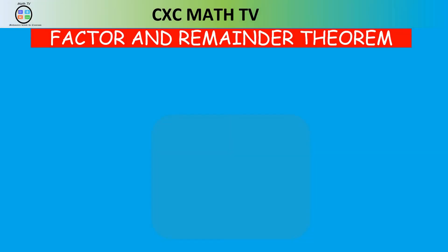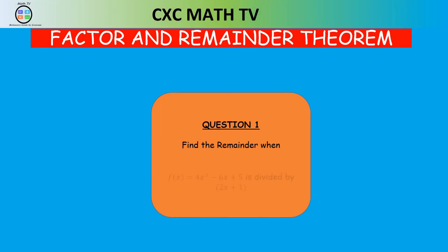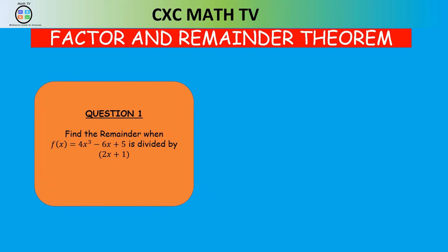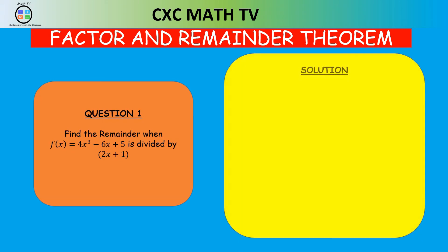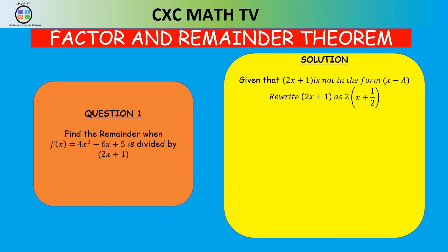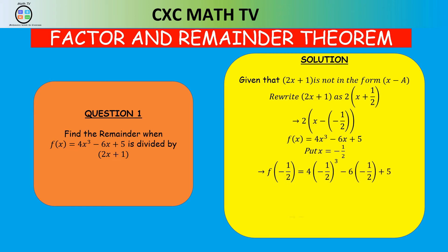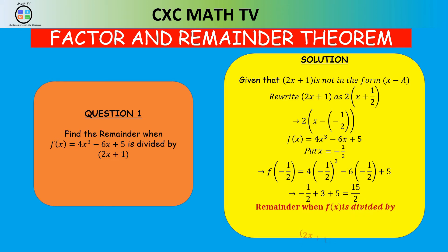Now pause the video and attempt this question: find the remainder when f(x) = 4x³ - 6x + 5 is divided by (2x + 1). We rewrite 2x + 1 by factoring out a 2 to get 2(x - (-½)). So we input x = -½. f(-½) = 4(-½)³ - 6(-½) + 5 = -½ + 3 + 5 = 15/2. So the remainder when f(x) is divided by (2x + 1) is 15/2.